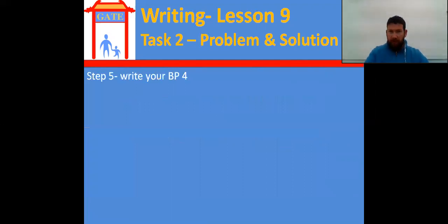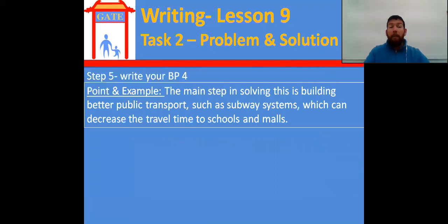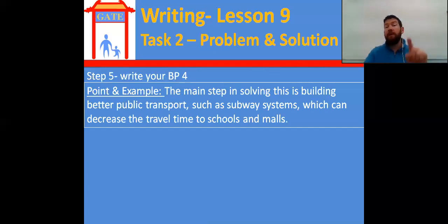The solution paragraph: what can we do to overcome the problem of pollution keeping people inside? Write your paragraph and then come back to see mine. My point and example I've put together in one sentence: the main step in solving this is building better public transport such as subway systems, which can decrease travel time to schools and malls. This is where a lot of young people spend their time — at school or at the mall with their friends.